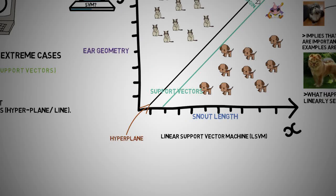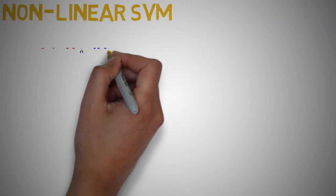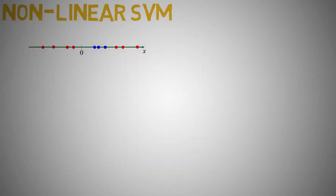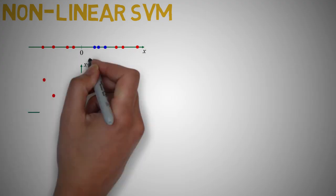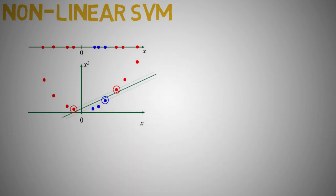But what happens if we have a data set that is not linearly separable? Say we are presented with data that looks like this, where it looks almost impossible to use a single line to separate the two classes.